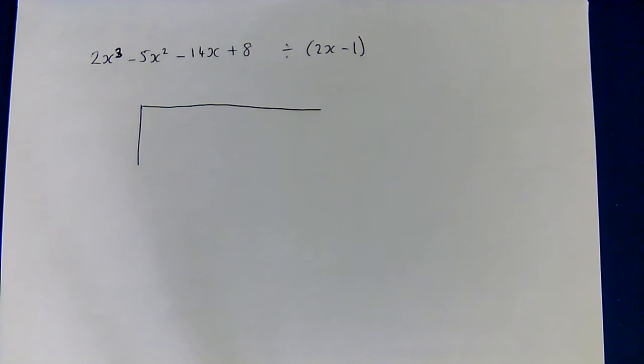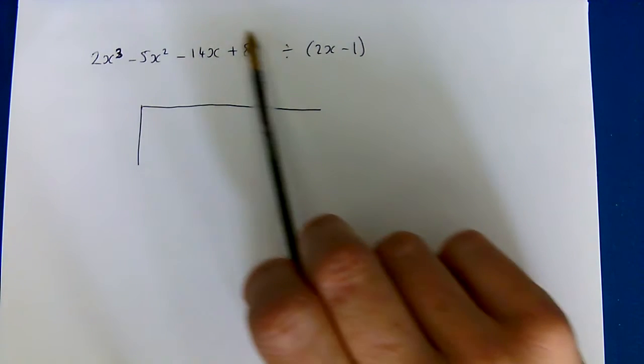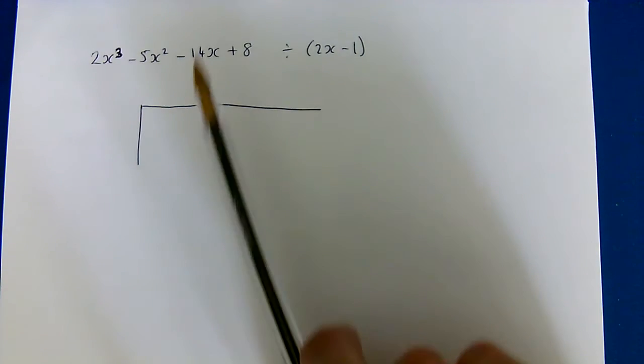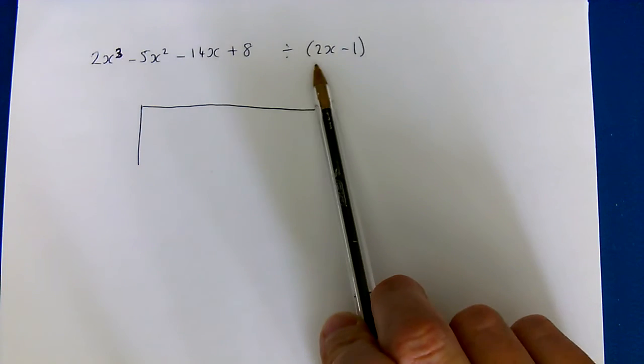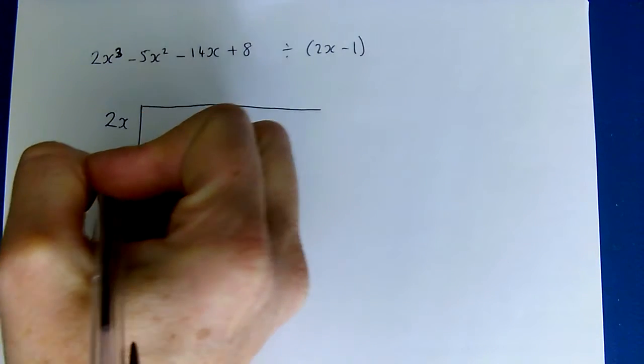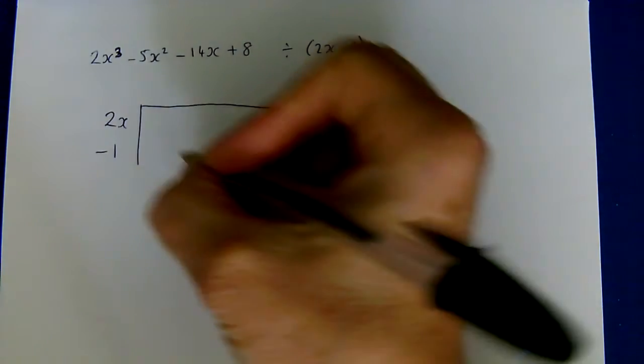This is just to show you the alternative way of doing algebraic division using a little grid. So this is what we are starting to divide. We'll be aiming to get a total of this inside our grid and we're divided by 2x minus 1, so we split that up into 2x and minus 1.